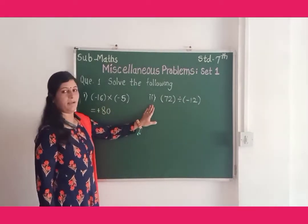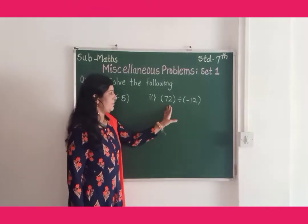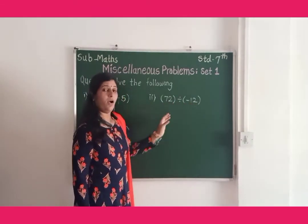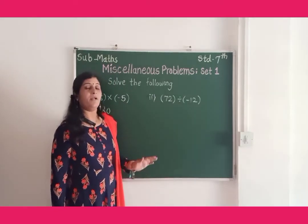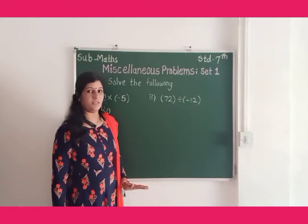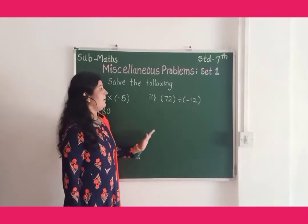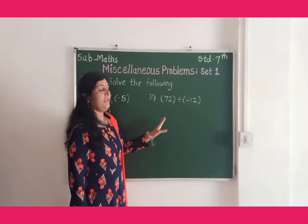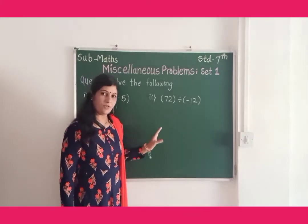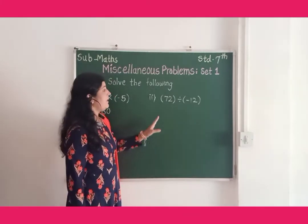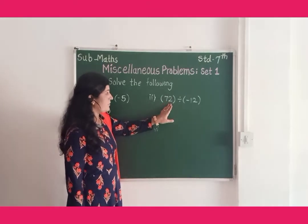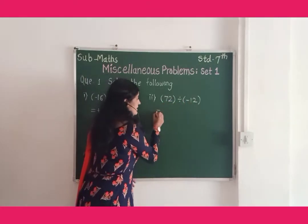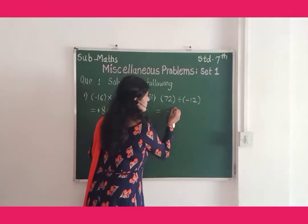Take the second example: 72 divided by negative 12. All of you know about rules of division of integers. Division of a positive number by a negative number is always a negative number. So here, positive 72 divided by negative 12, the answer is negative 6.